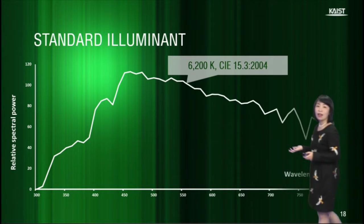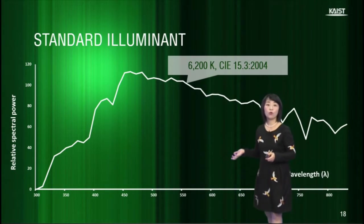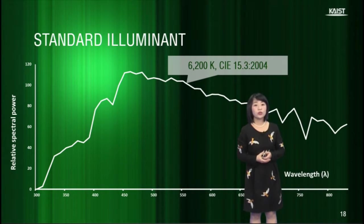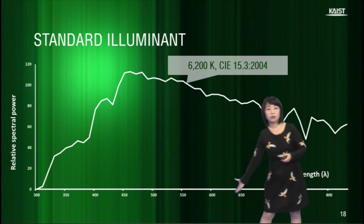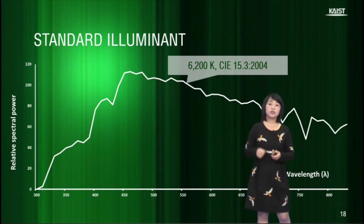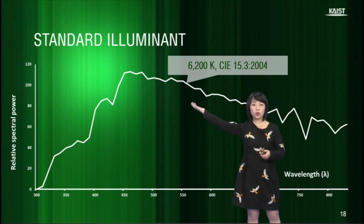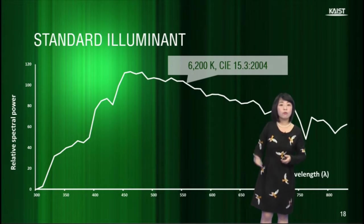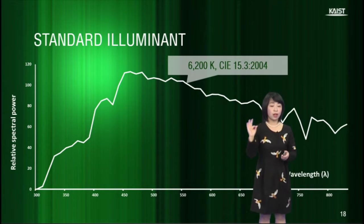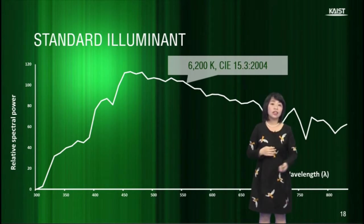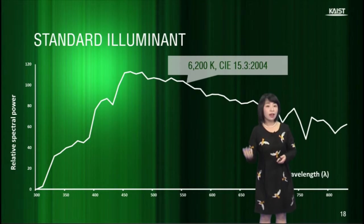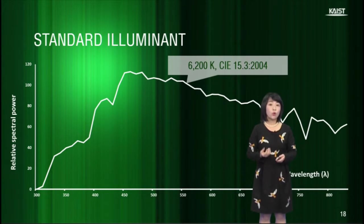Ok, let's see then how the standard illuminant for 6200 Kelvin is defined along the spectrum of visible light. If the spectral distribution of the light source matches to this chart, it should be a perfect natural light. Accordingly, the color rendering index of that light should reach 100.